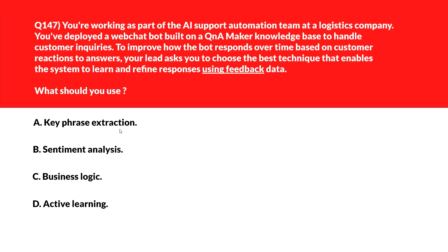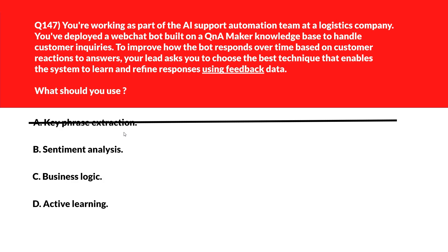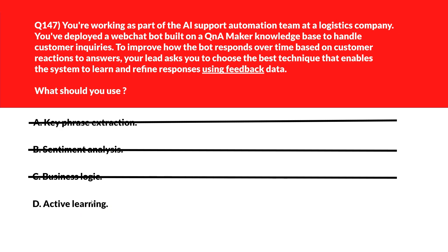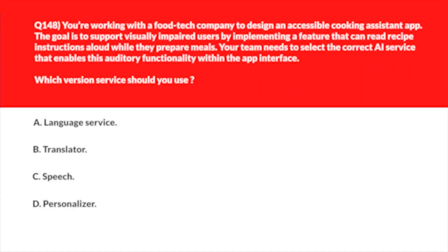Option A: Key phrase extraction extracts important phrases from text but doesn't adjust bot behavior using user feedback — wrong answer. Option B: Sentiment analysis assesses emotional tone but doesn't fine-tune response relevance based on interaction history — wrong choice. Option C: Business logic applies rule-based decisions but doesn't support adaptive learning from user behavior. Option D: Active learning enables the bot to improve by learning from user feedback and ranking relevance of answers over time. Active learning, option D, is the right answer.